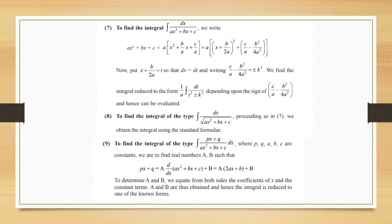Now here are some very important types. Type 1 is integrals of the form 1/(ax² + bx + c), that is 1 upon a quadratic. We need to convert this quadratic denominator into a perfect square. First, make the coefficient of x² equal to 1 by taking 'a' outside. Then add and subtract (b/2a)² so it becomes (x + b/2a)² plus a constant.